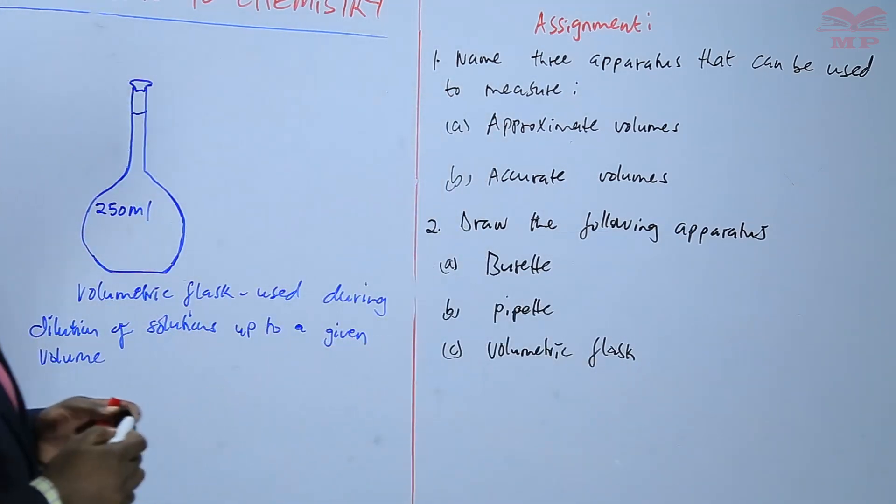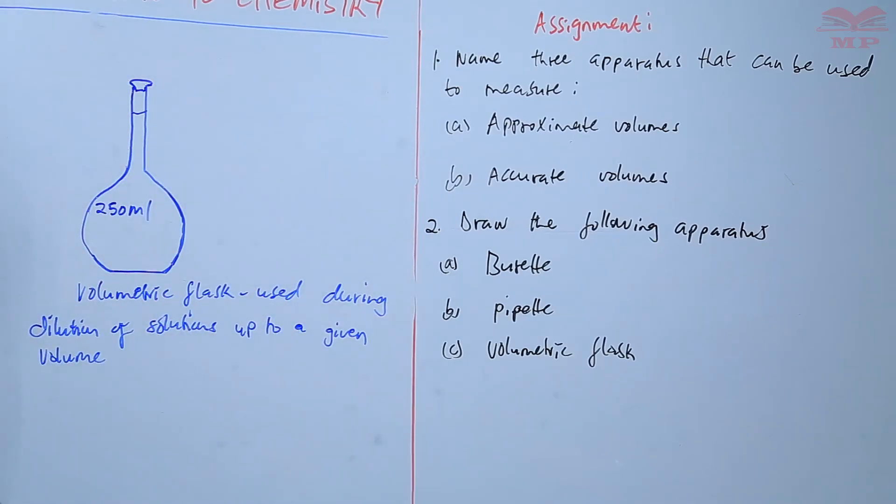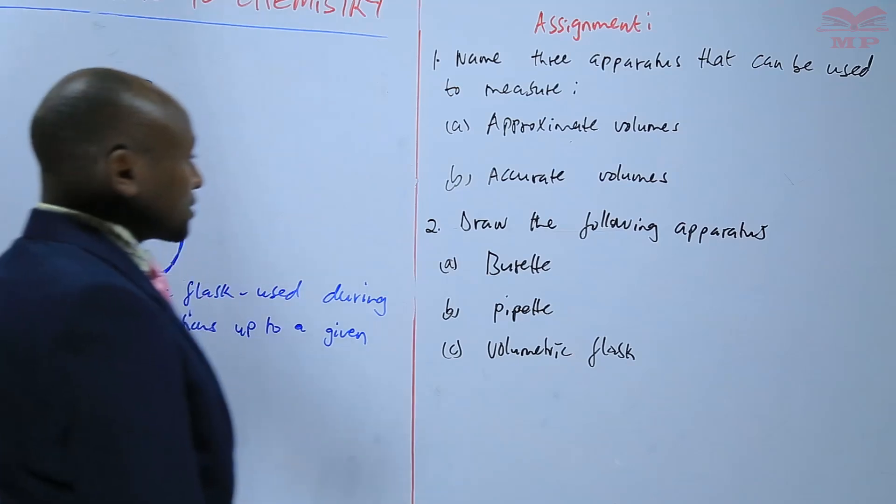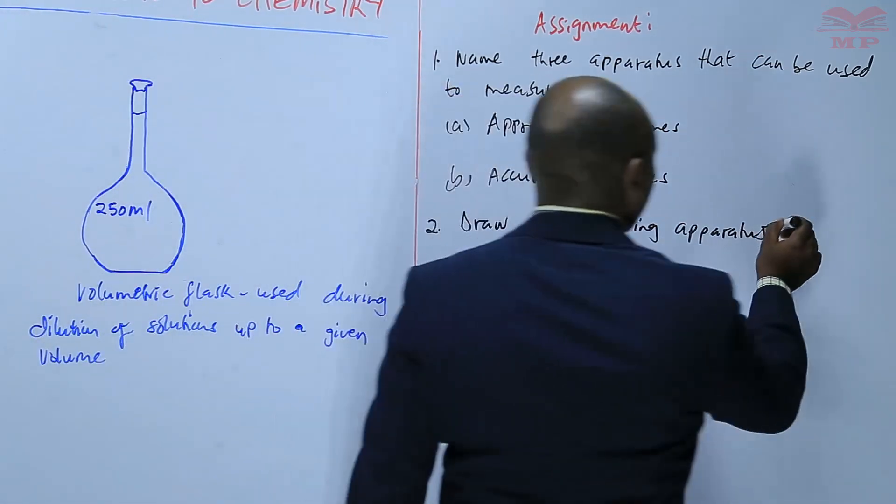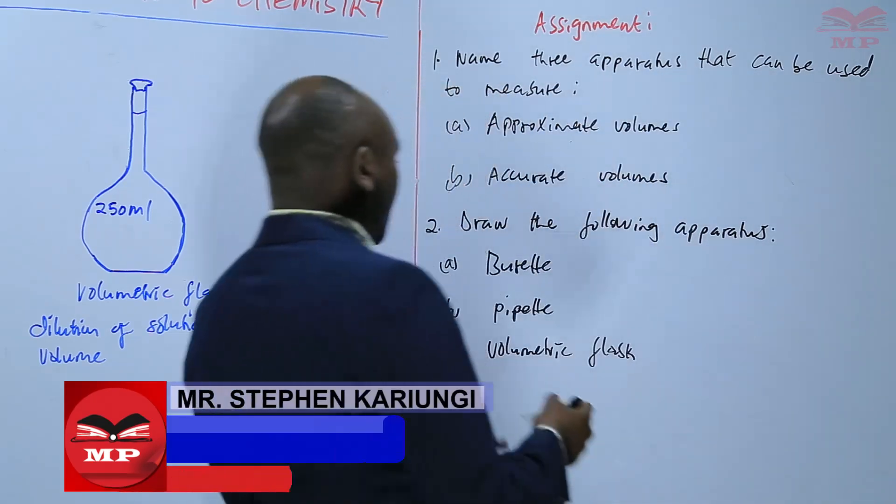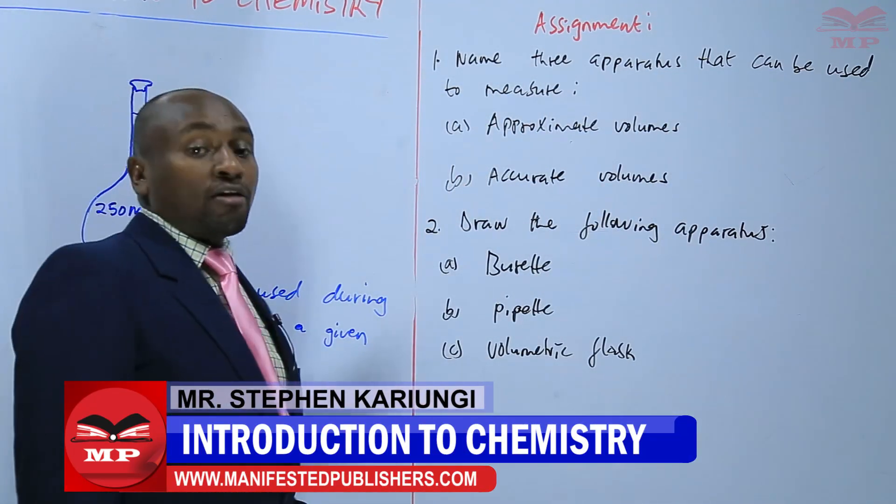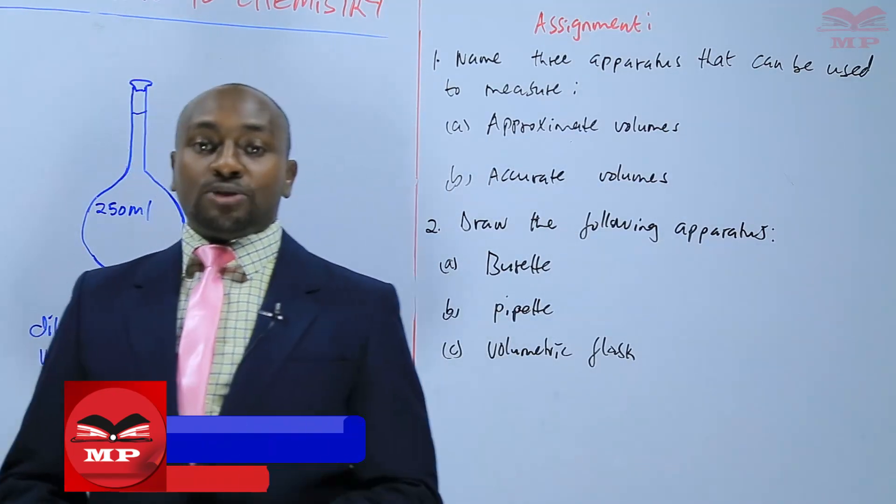So the assignment: number one, name three apparatus that can be used to measure a) approximate volumes, b) accurate volumes. Number two, draw the following apparatus: a) burette, b) pipette, and c) volumetric flask. We'll stop there until next lesson. Goodbye.